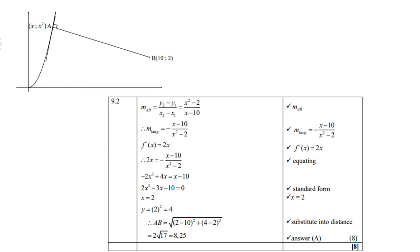Or alternatively, you can make use of gradient. So you first find the gradient between points A and B, which of course is (x squared minus 2) over (x minus 10).